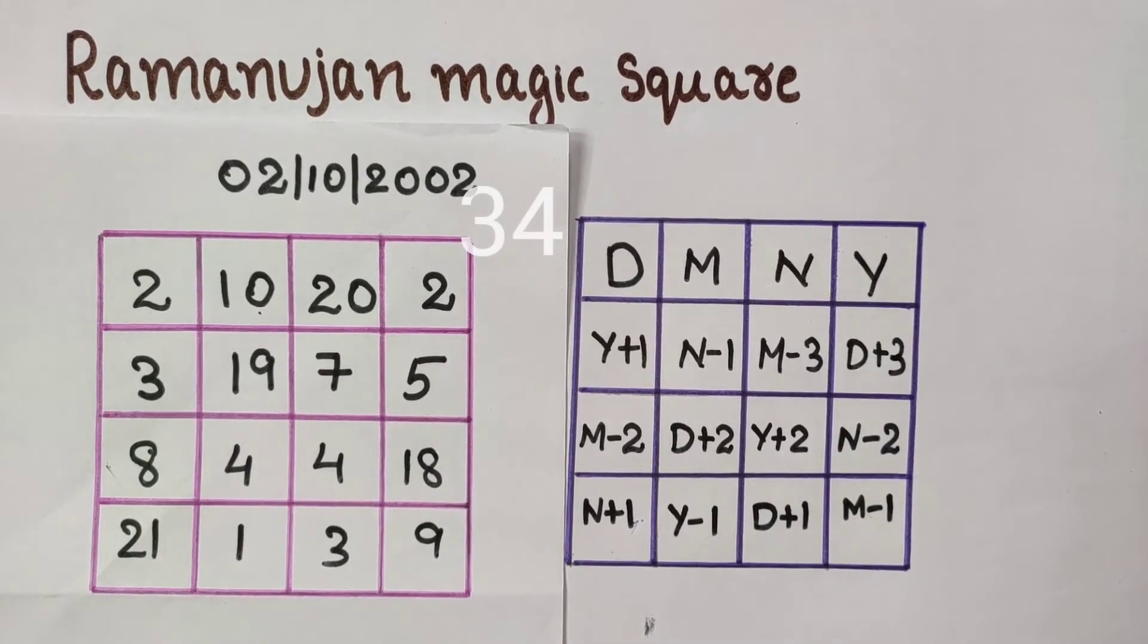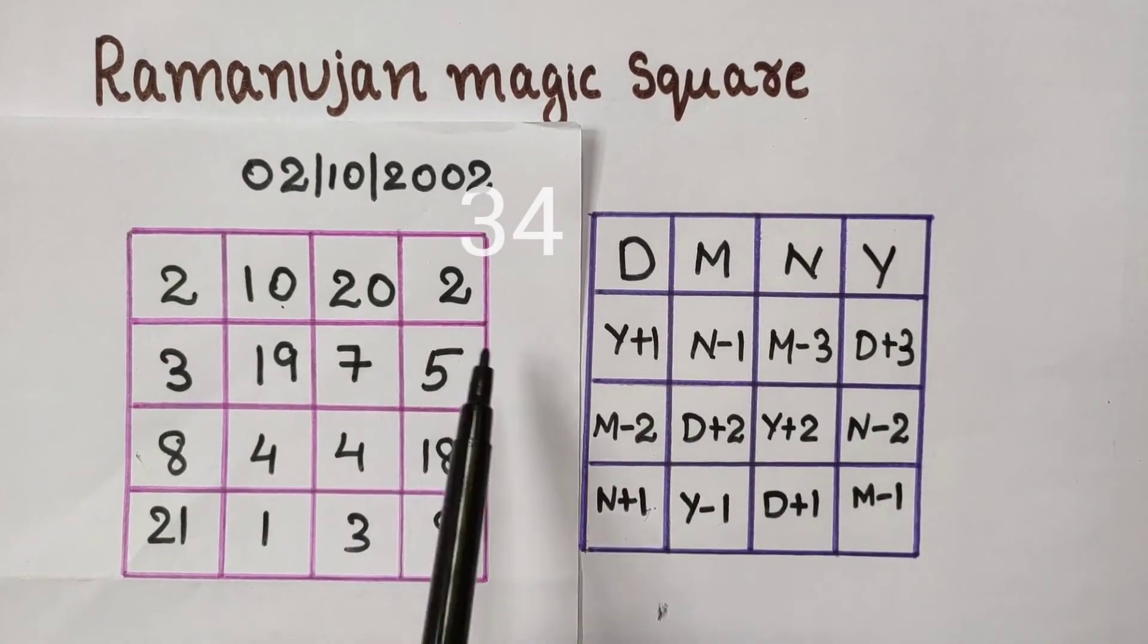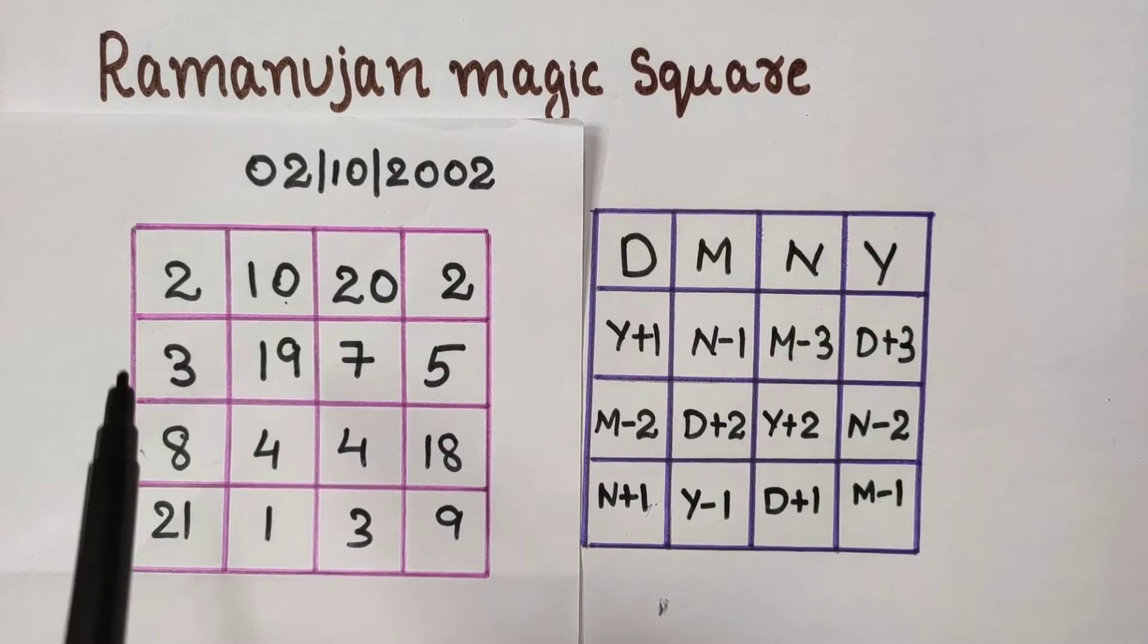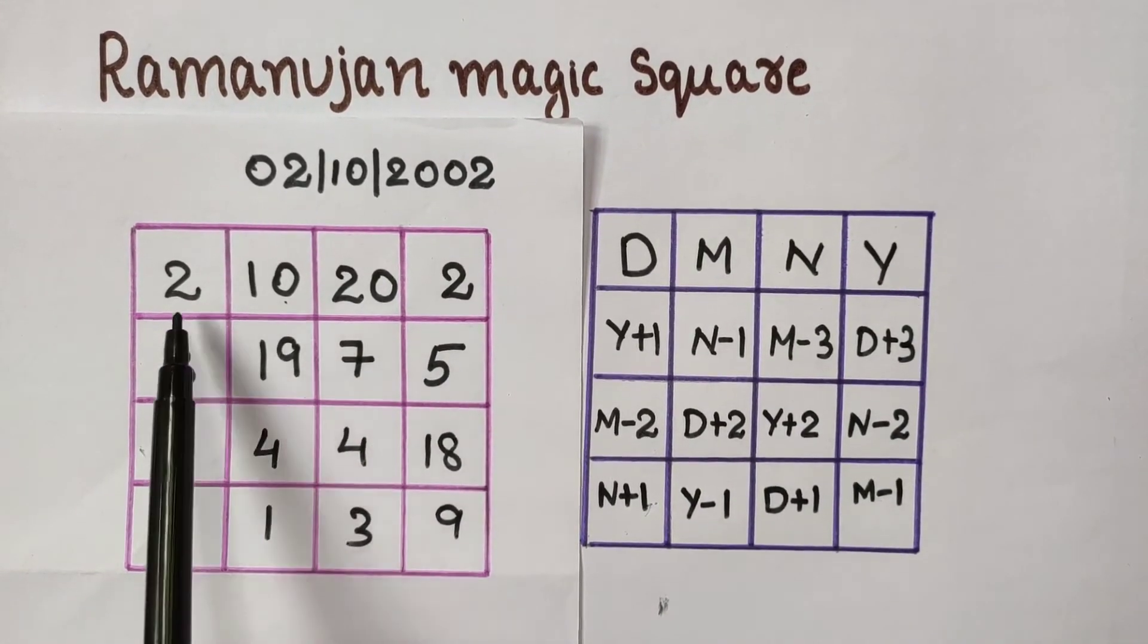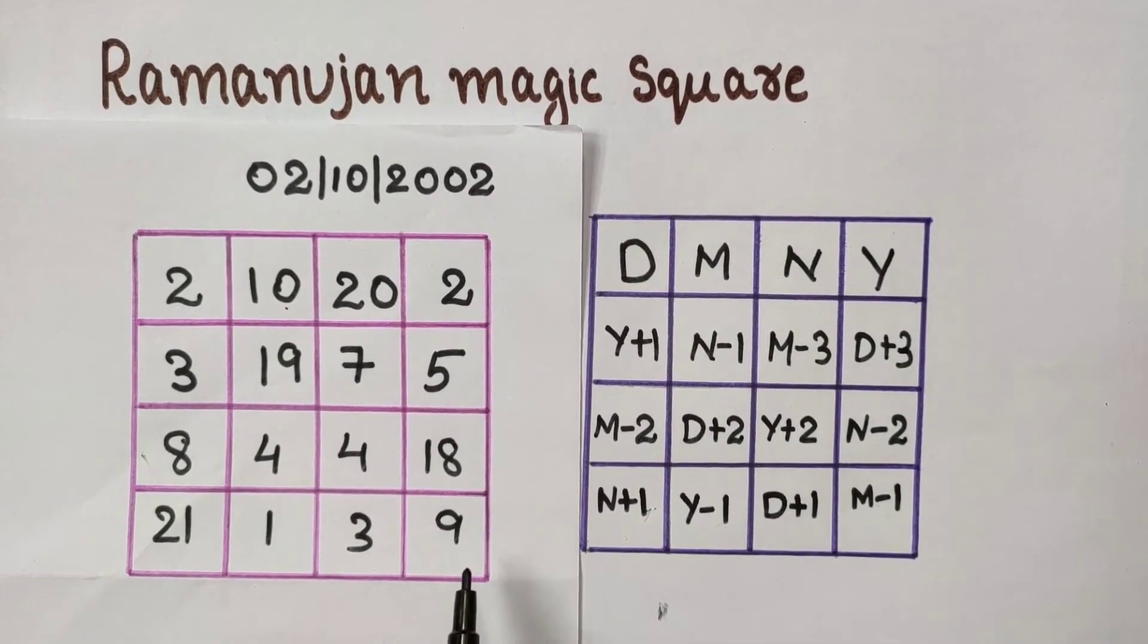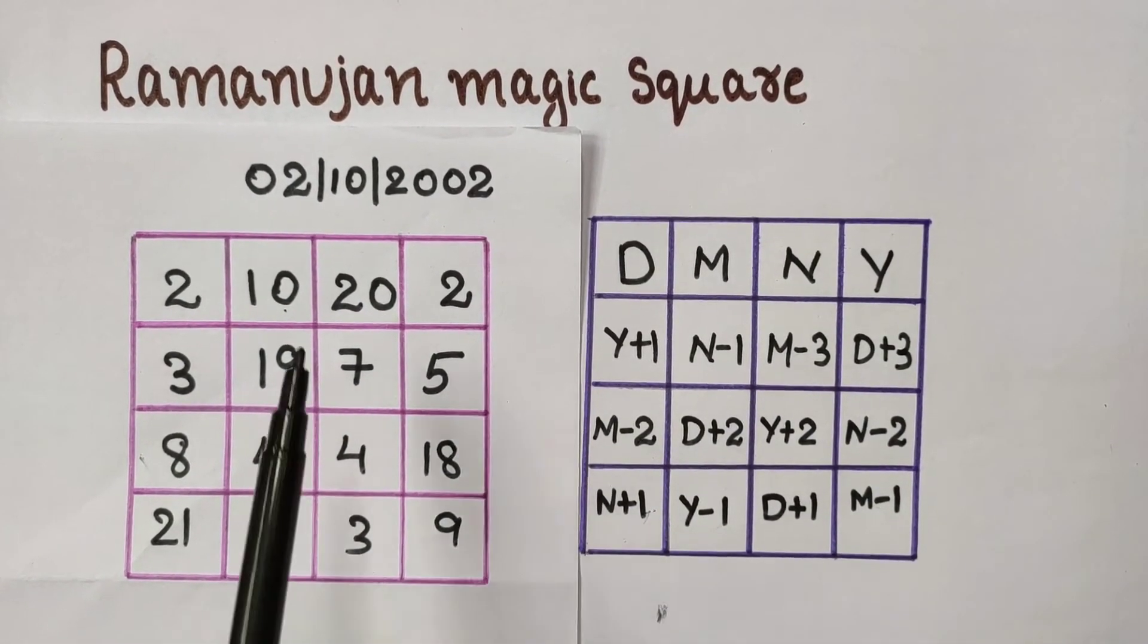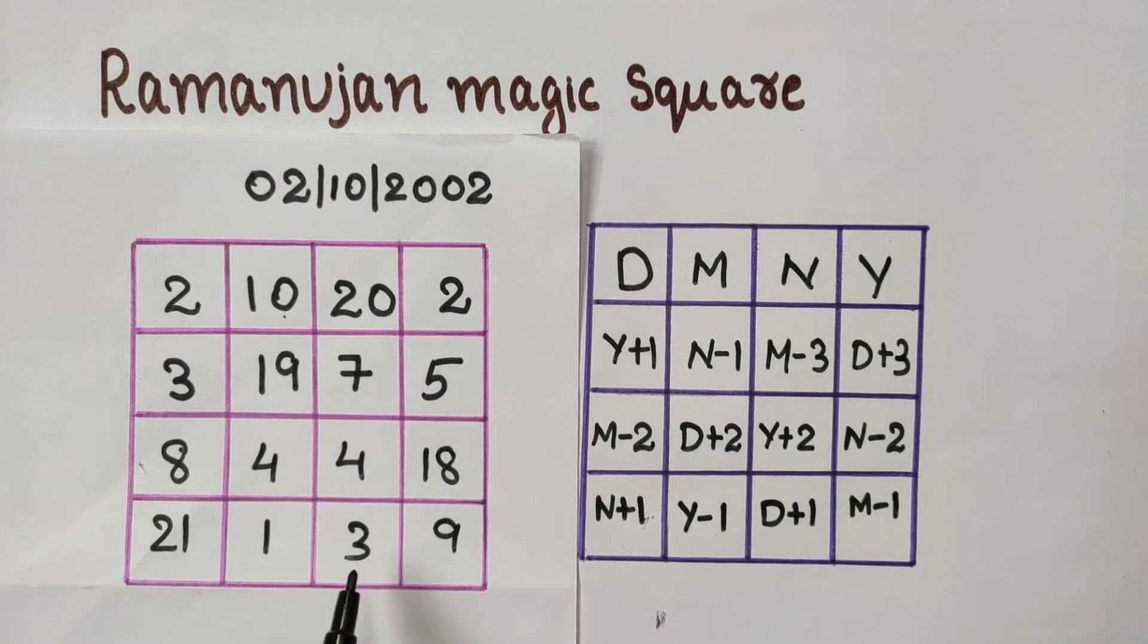The sum of numbers of any row and sum of numbers of any column is 34. Sum of corner numbers 2, 2, 21, and 9 is 34. Sum of 10, 20, 1, 3 is 34. And sum of 3, 8, 5, 18 is 34.